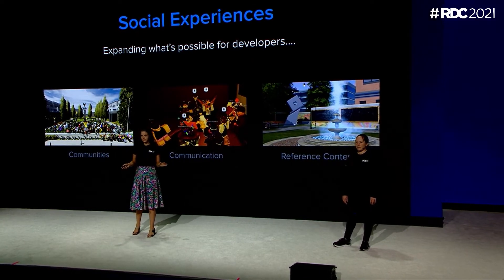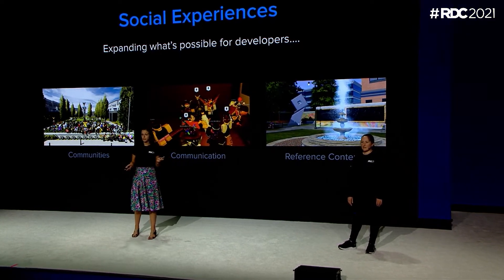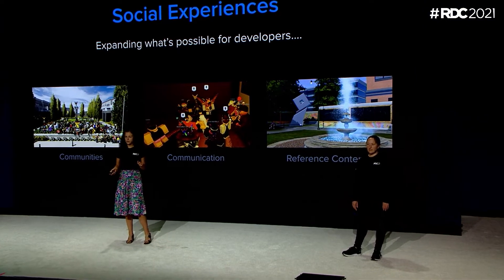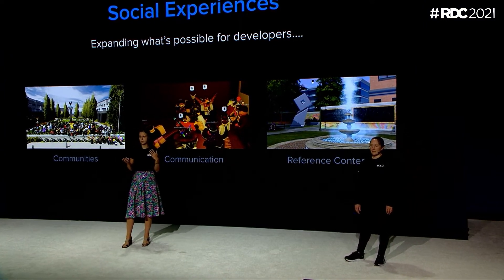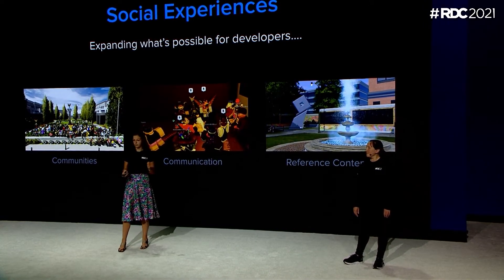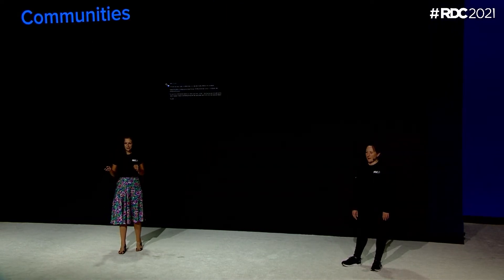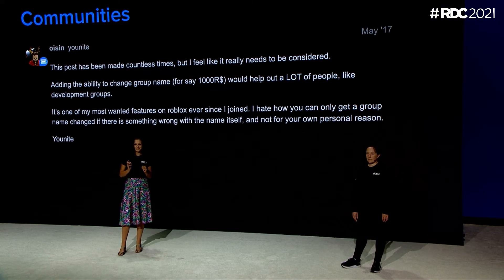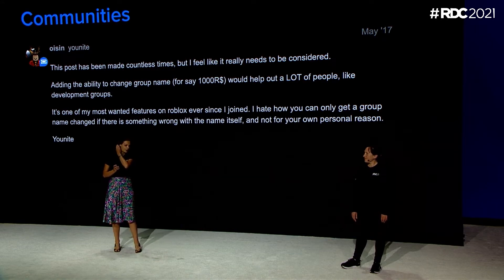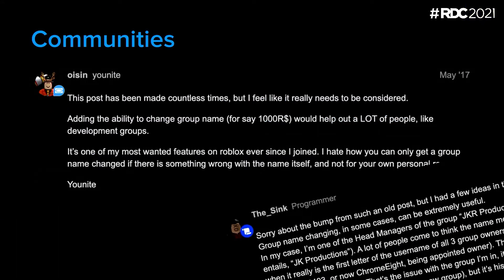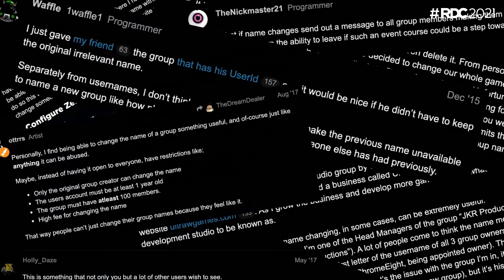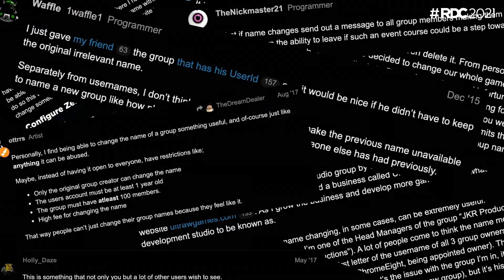The social team has three main focuses: communities, communication, and reference content. I'll start off talking about communities and the work we're doing there, and then Kelly will take it away with communication. Out of all the group-related feature requests, there's one that we've seen requested above all others, and that is group name change. You may have seen it in our 2021 roadmap, and I'm excited to give you all a sneak peek of how it's going to work. Let's dive in.